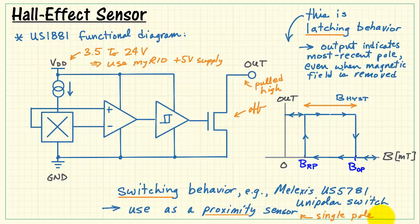A hall switch is used for a proximity sensor. That is, you have a single pole. When it's close to the sensor, it turns it on. When it's far away from the sensor, it turns off. The latching behavior is used with strip and ring magnets, which have alternating north and south poles.